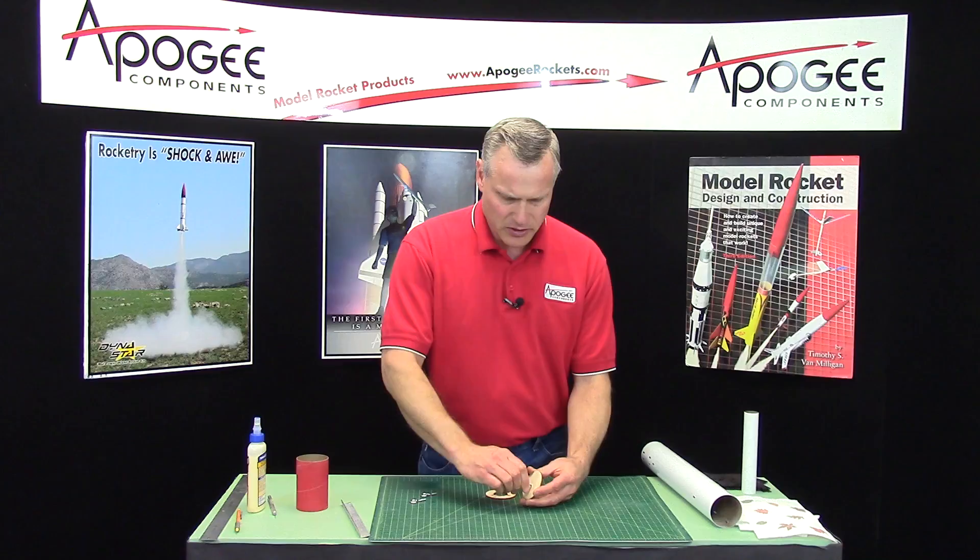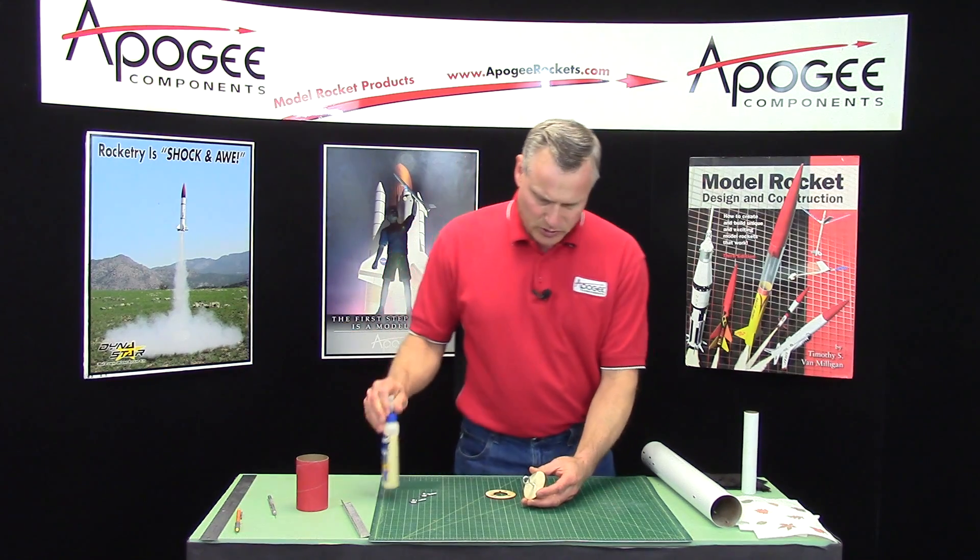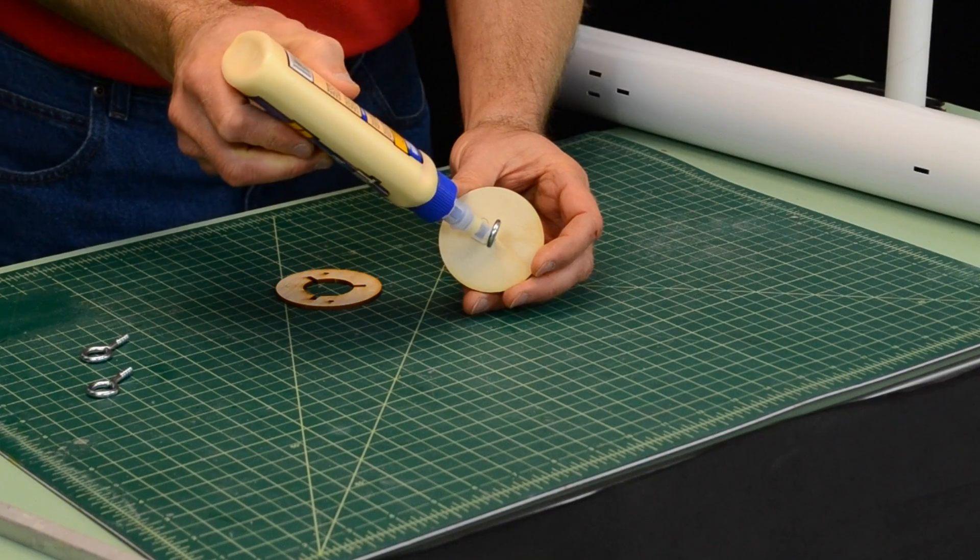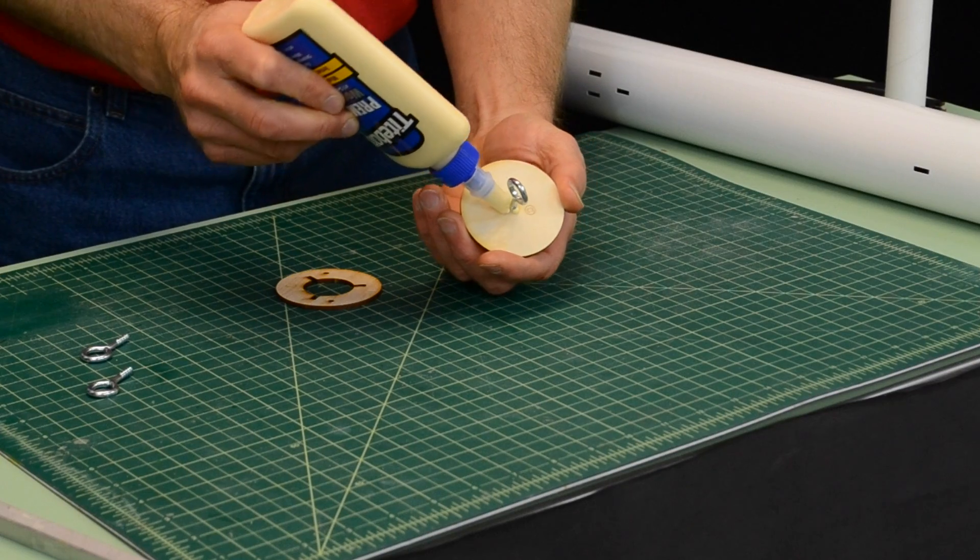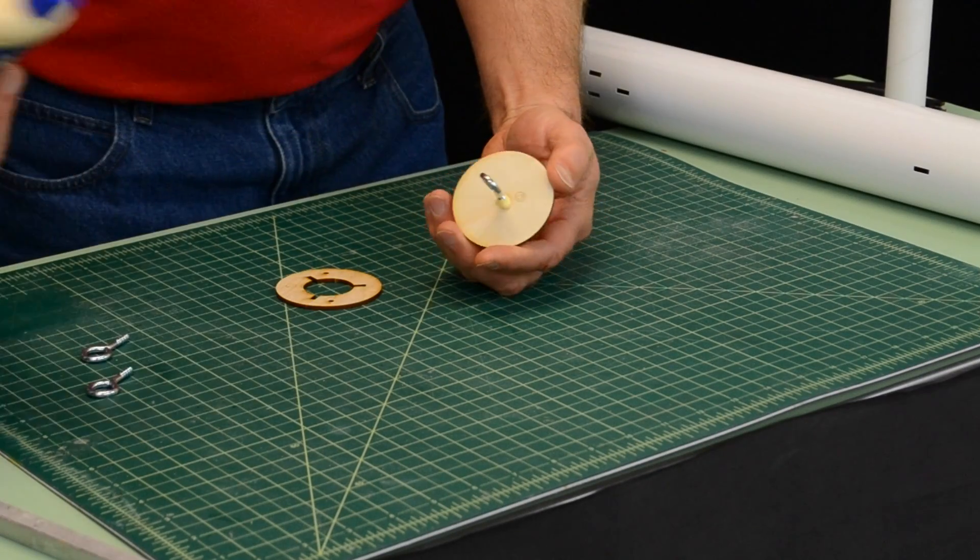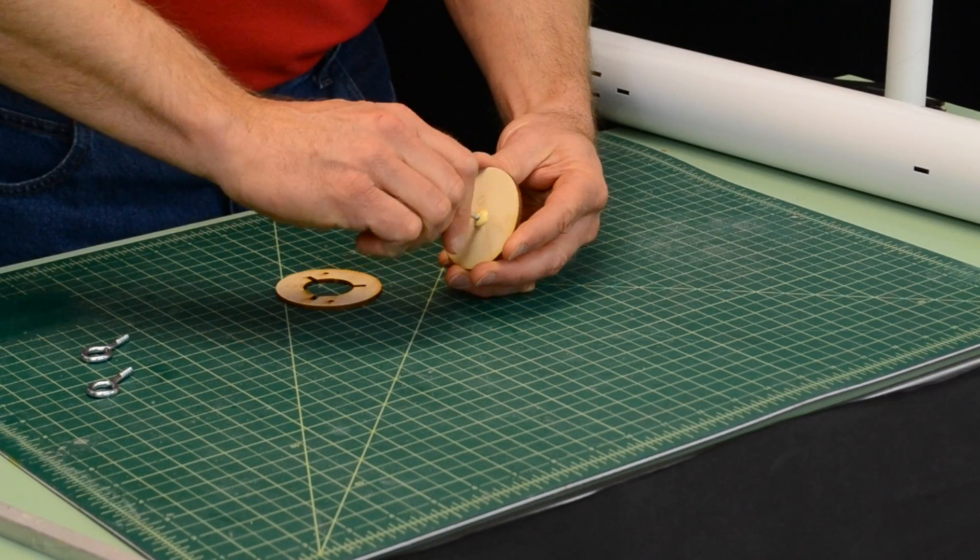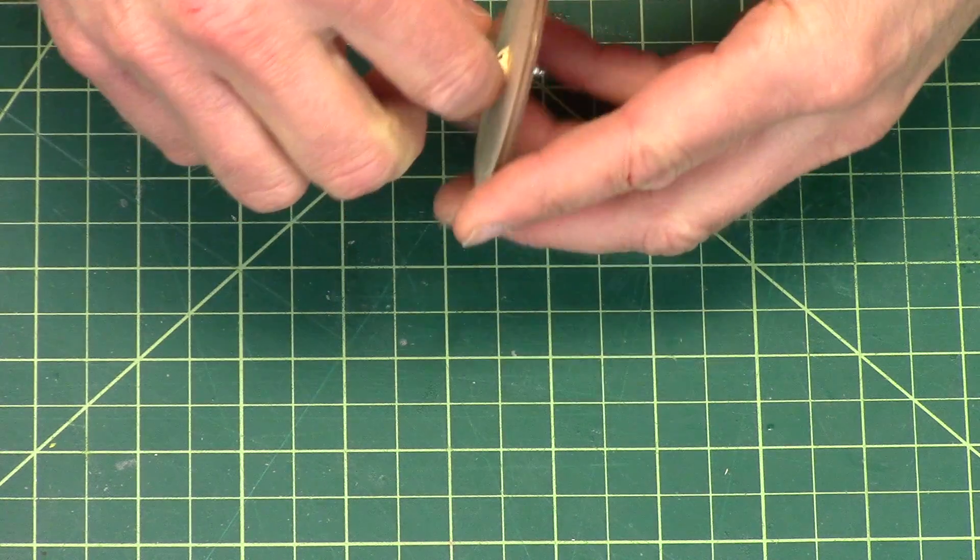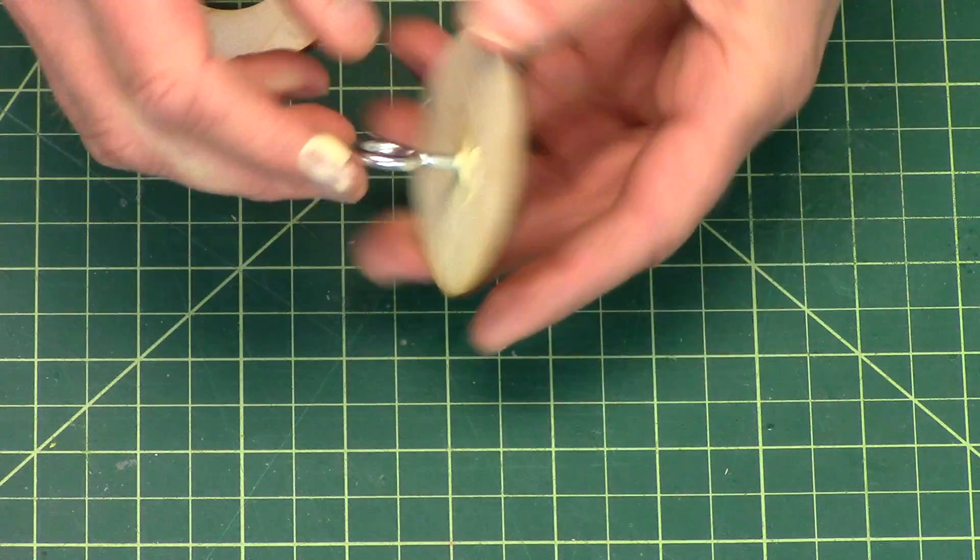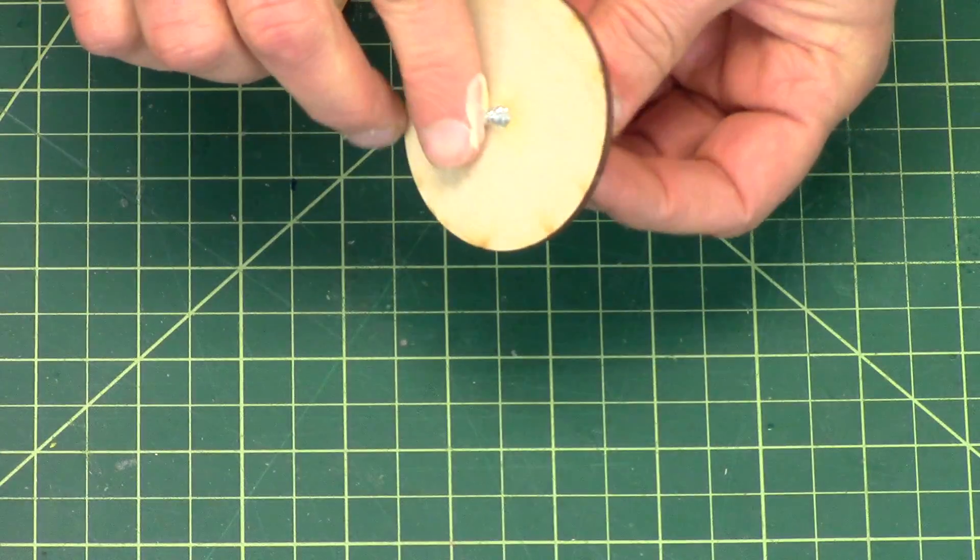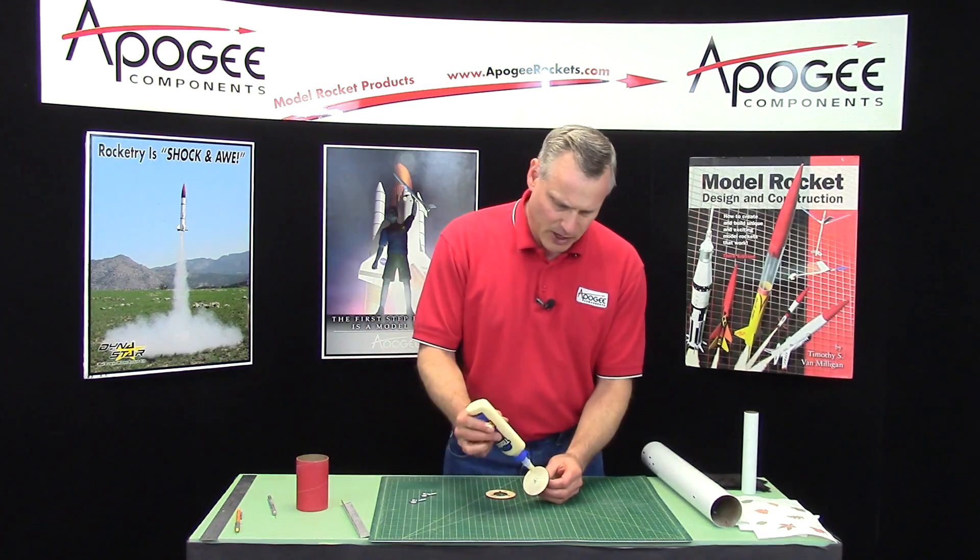Once you get it started, put a little bit of wood glue on the threads. Smear it around like that, and then put a fillet of glue on the back side.